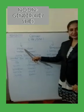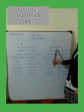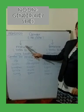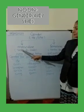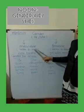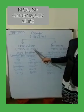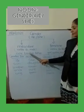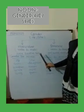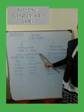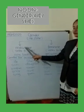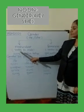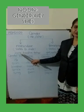Masculine gender and feminine gender. Now what is masculine? Masculine means words that refer to male, like boy, brother, and father. These are the examples of masculine gender, and we write 'he' for them.